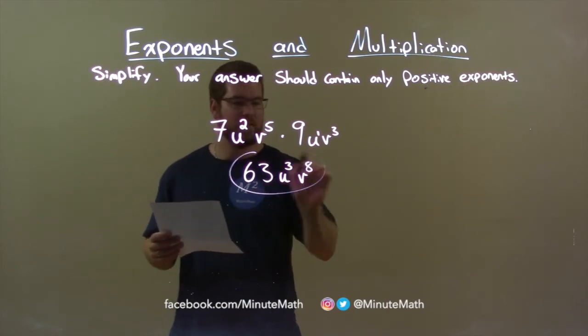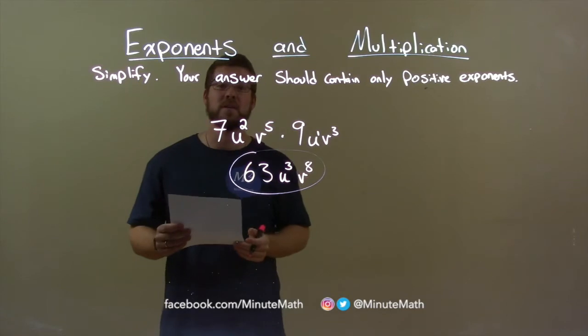And so my final answer is 63u to the 3rd power times v to the 8th power.